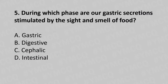Now let's move to question number 5. During which phase is gastric secretion stimulated by the sight and smell of food? Option A: Gastric. Option B: Digestive. Option C: Cephalic. Option D: Intestinal. And the answer is Option C: Cephalic.